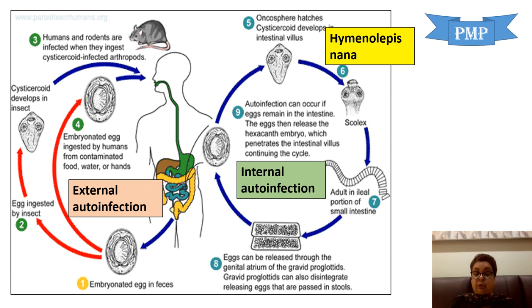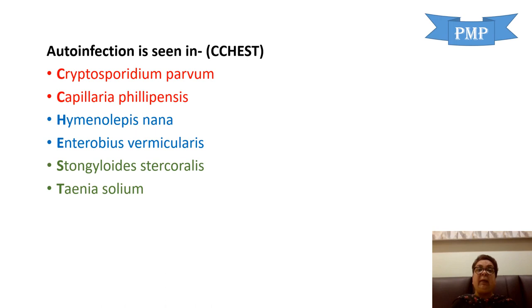H. nana is also called the dwarf tapeworm — the smallest tapeworm infecting man. Important parasites in which auto-infection is seen can be remembered with the mnemonic CHEST with double C: Cryptosporidium parvum, Capillaria philippensis, H. nana, Enterobius vermicularis, Strongyloides stercoralis, and Taenia solium.